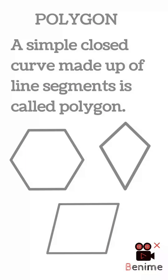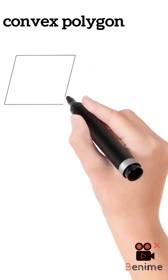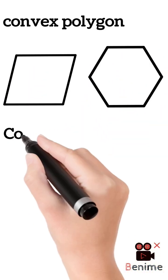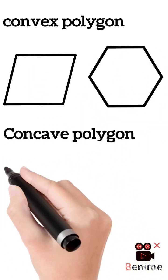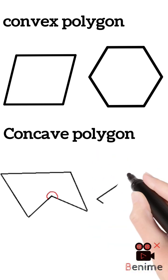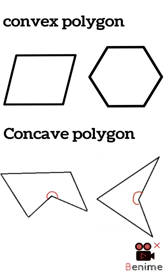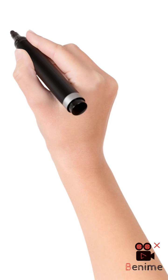Convex Polygon: A polygon in which each interior angle is less than 180 degrees. Concave Polygon: A polygon in which at least one interior angle is greater than 180 degrees.